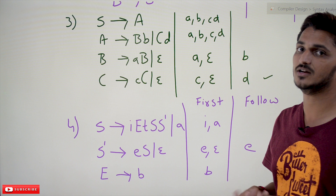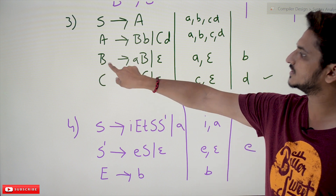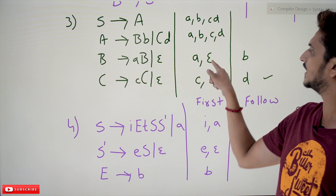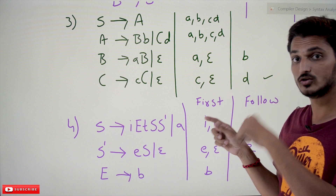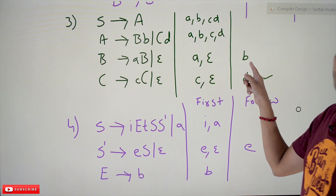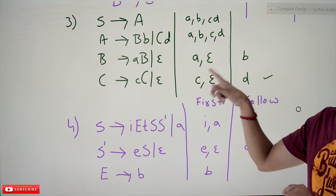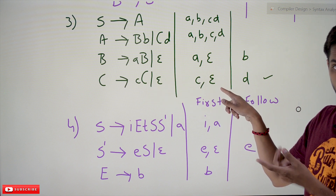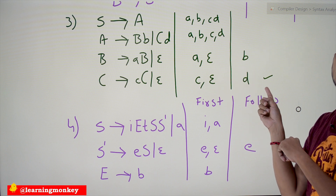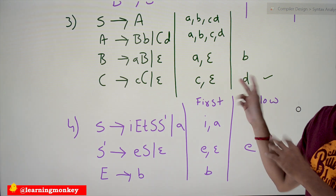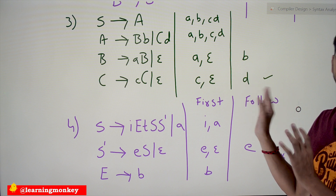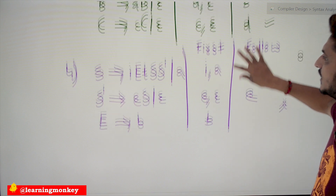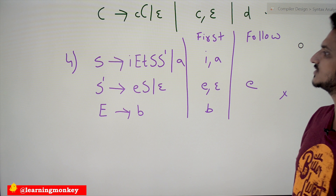Now B → ab | ε. First(ab) = {a}, First(ε) = ε. Since there is epsilon, check Follow(B). Follow(B) = {d}. First and Follow don't have a common symbol — okay. Similarly, C → cc | ε. First(cc) = {c}, and with epsilon, check Follow(C) = {d}. First and Follow don't have a common symbol. So this grammar is LL1.